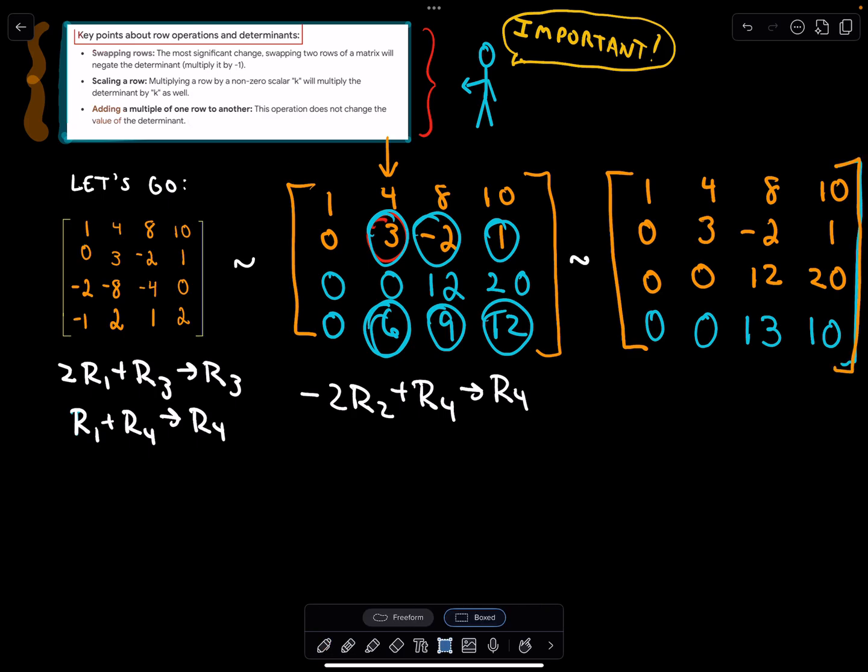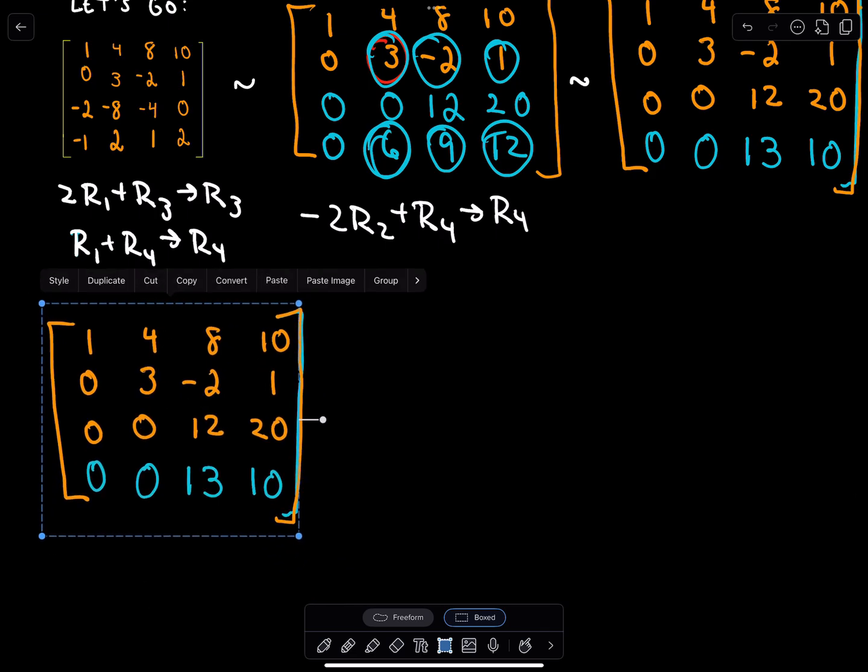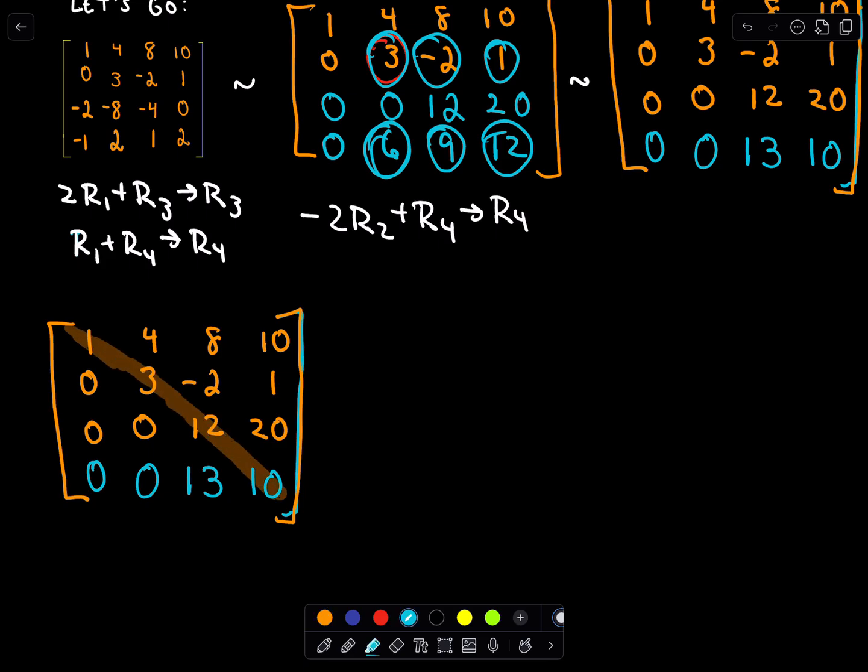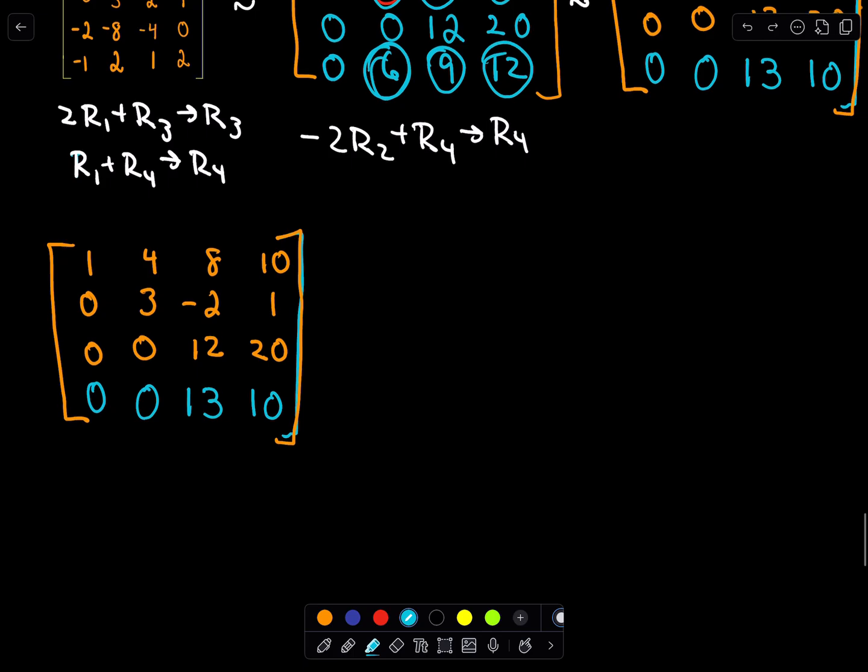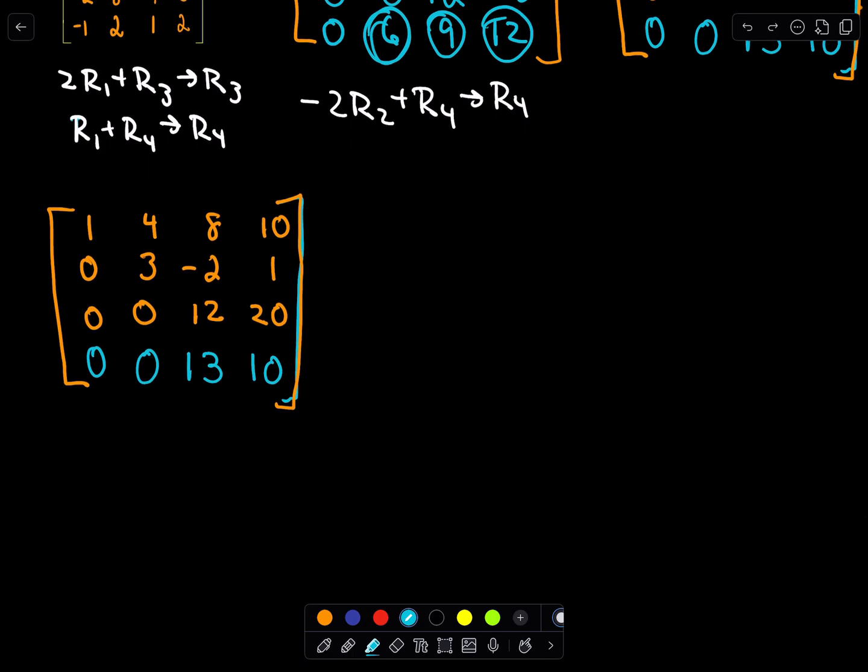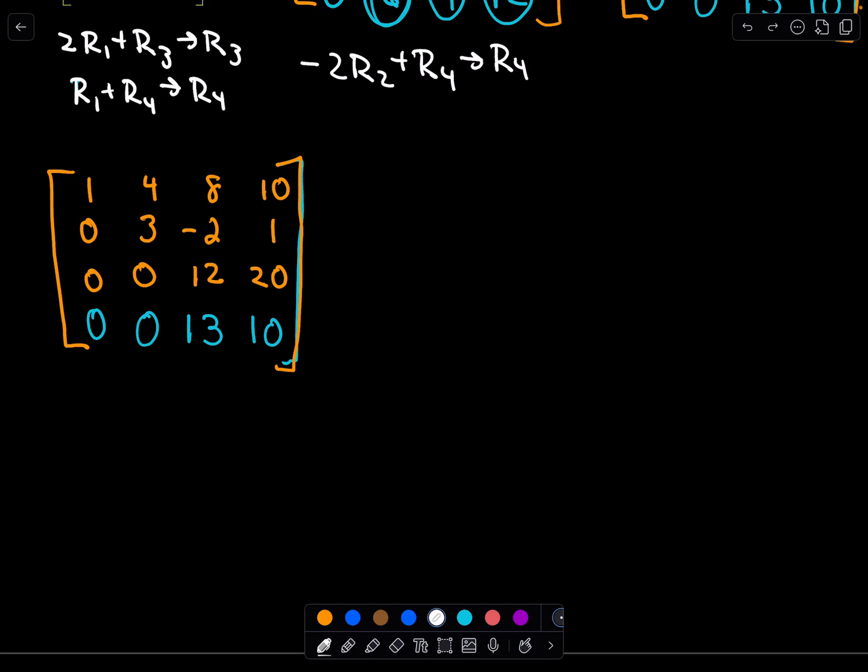We're getting closer. We almost have it in the form that we need. It looks like the only thing left to do, just looking along this main diagonal, the only element that's left to make into a 0 is that 13. There's actually a couple different ways you could do it. The way that I'm going to do it is I'm going to take 1/12 of that third row and make that my new third row. The reason why I'm doing that is I'm going to be able to make this element into a 1. Once that's a 1, I'll be able to do some row operations to make that into a 13. That's my thought process.